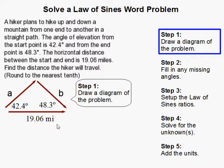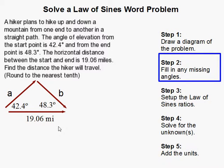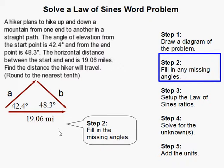The next thing that makes it easy is to fill in any missing angles, and you need that when we're solving for lots of different things. We're going to fill in the missing angle and I got 89.3 degrees here because I added up these two angles